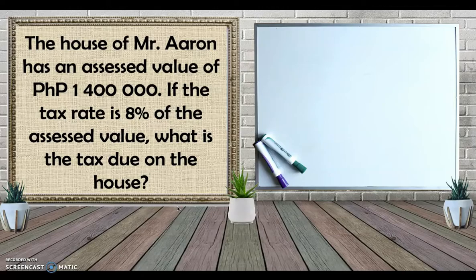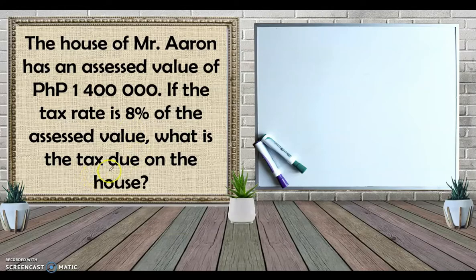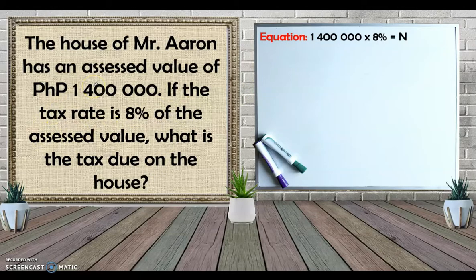Another example about taxes: The house of Mr. Iran has an assessed value of 1.4 million pesos. If the tax rate is 8% of the assessed value, what is the tax due on the house? Again, since taxes are a percentage, we multiply the amount of the item (1,400,000) by the rate (8%, or 0.08).